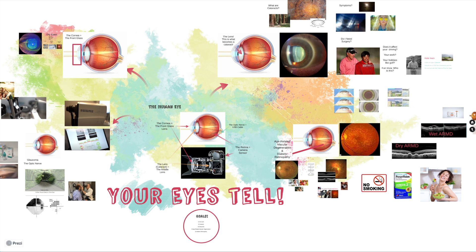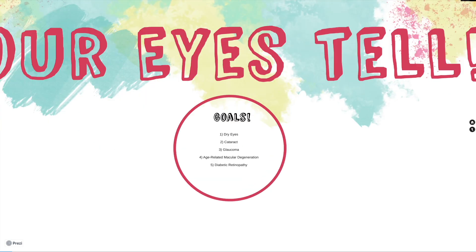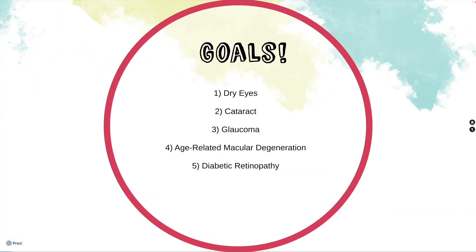Today let's talk about the five most common things you need to know about your eyes. There are five conditions we should touch on: dry eyes, cataracts, glaucoma, age-related macular degeneration, and diabetic retinopathy.